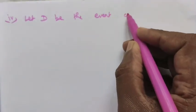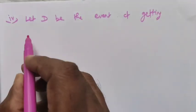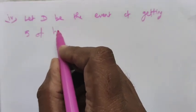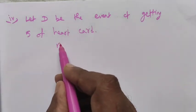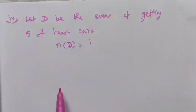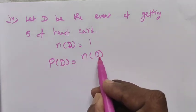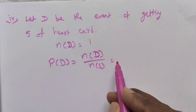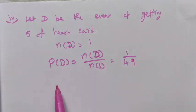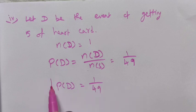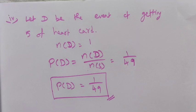Fourth: Let D be the event of getting a heart card bearing the number 5. There is only one such card, so N(D) = 1. The probability of D = N(D) divided by N(S) = 1 out of 49. The probability of getting the number 5 heart card is 1 out of 49. Thank you, students.